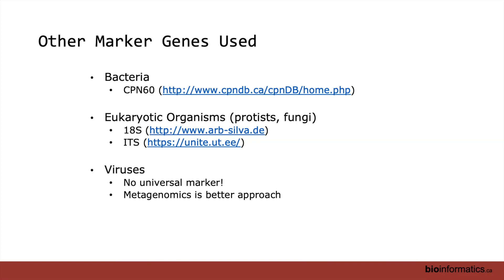There are other marker genes you might come across for bacteria. Probably the other big candidate is CPN60, chaperonin 60. It's beneficial because it's only in a single copy, which is really nice, and I see it a lot in vaginal microbiome studies — it seems to have better resolution there. If you're interested in eukaryotes, not bacteria or archaea, you often see 18S or ITS — the inter-transcribed spacer. ITS1 and ITS2 are really good for resolving fungal communities, and sometimes protists.